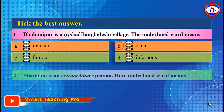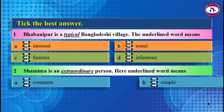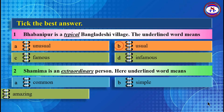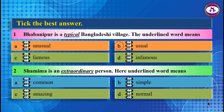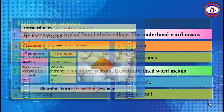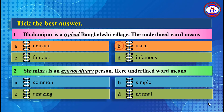Number 2: Samima is an extraordinary person. The underlined word means — Option A: Common, Option B: Simple, Option C: Amazing, Option D: Normal. We have already discussed the meaning of the word extraordinary and its synonyms. The best answer is Option C: Amazing.